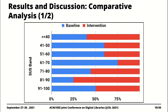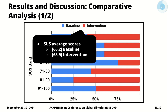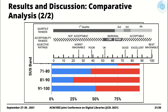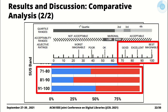In the case of the comparative study, we see a clear preference for the IR integrated with controlled vocabularies: the vast majority of participants highly rated the intervention institutional repository. Further analysis of the SUS scores confirms that the vast majority of participants highly rated the intervention IR as opposed to the baseline IR.